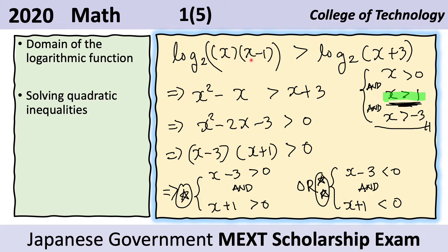We also write down the domains of each function. The original log of x has a domain of x greater than zero, so only positive values are allowed. Similarly, log of x minus one requires x minus one greater than zero, which means x is greater than one. And x plus three must be greater than zero, which means x is greater than negative three.